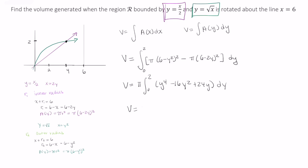We end up with our volume is equal to pi times y to the fifth over 5 minus 16y cubed over 3 plus 12y squared, evaluating from 0 to 2. So our volume is pi times 32 over 5 minus 16 times 8 over 3 plus 12 times 4. And this should give us 176 pi over 15. I hope this video was helpful.